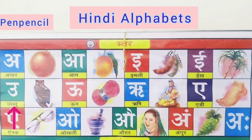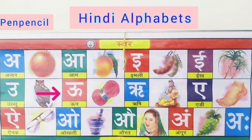U say ullu — owl. U say ullu — owl. Oo say uun — wool. Oo say uun — wool.